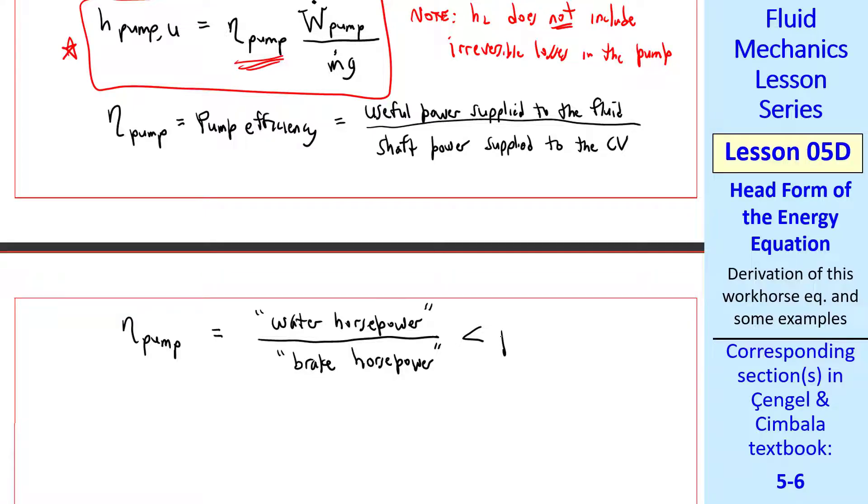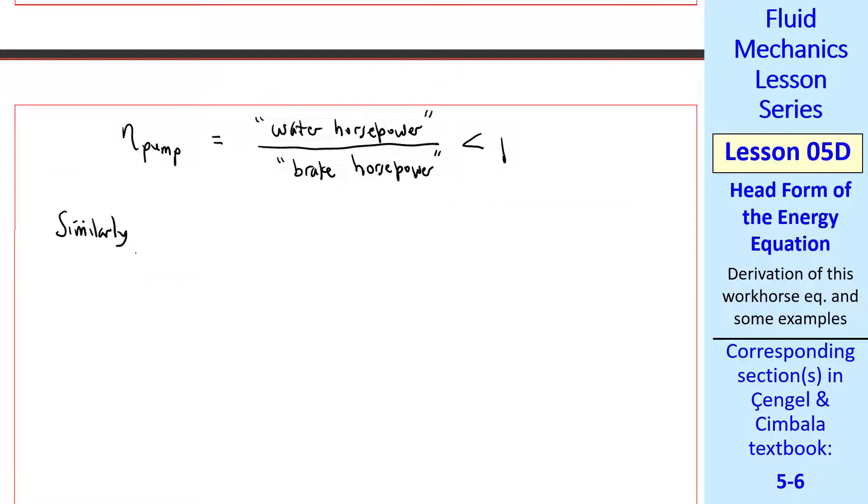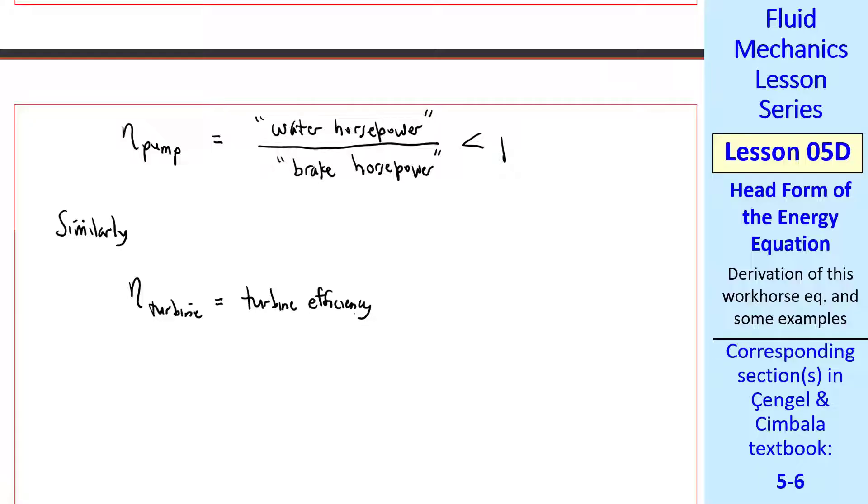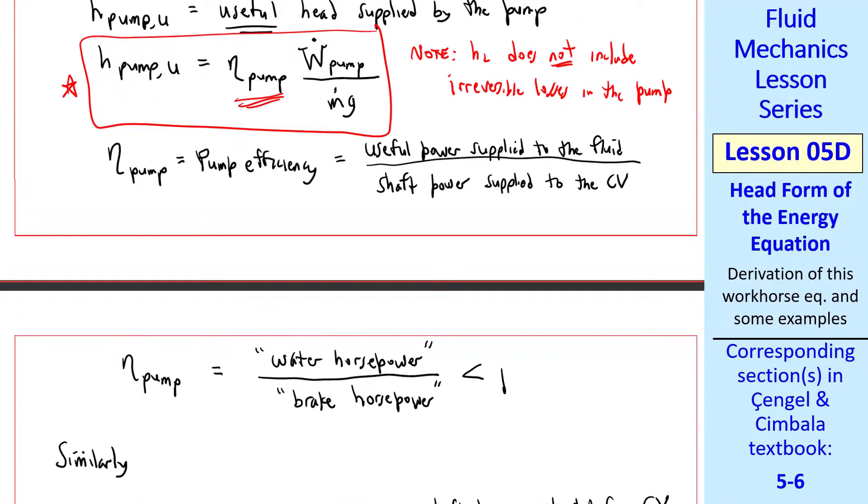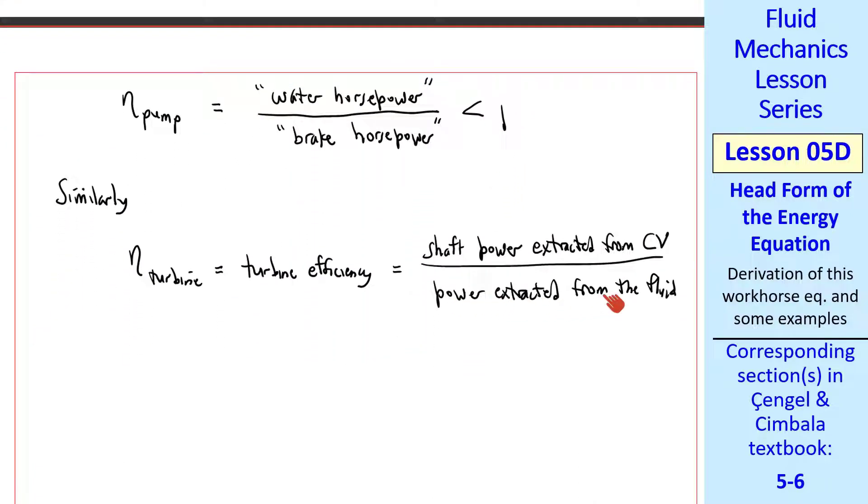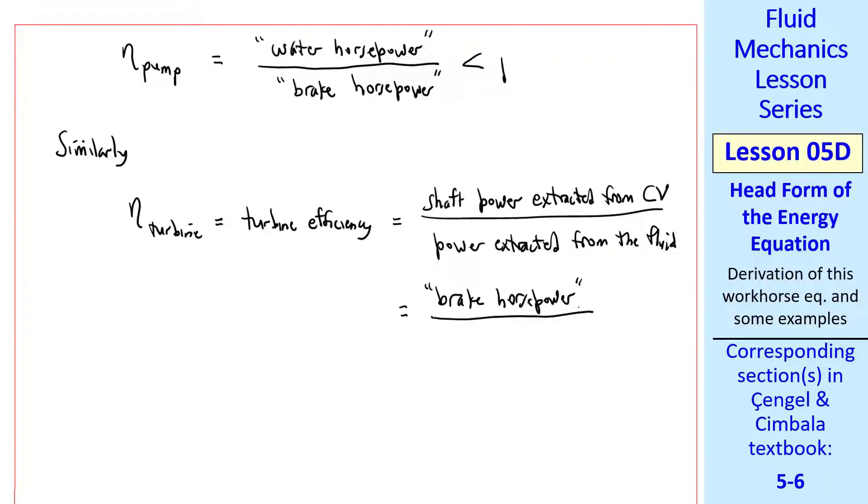Now let's talk about a turbine. It's similar but opposite. Let eta turbine be the turbine efficiency. It'll be the shaft power extracted from the control volume over the power extracted from the fluid. We see that it's the opposite, in other words, the reciprocal of pump efficiency. You have to supply more shaft power to get some useful power. Similarly for a turbine, you have to extract more power from the fluid to get the required extracted power through the shaft. Again, in turbomachinery parlance, eta turbine is equal to brake horsepower over water horsepower. Again, due to the second law, it always has to be less than 1.